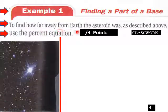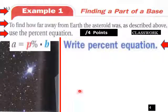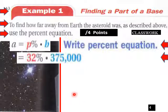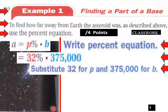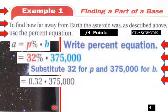Example one. To find out how far away the asteroid was, as described above, use a percent equation. So A equals P percent times B. Right, percent. So we're going to do it in example one. 32 percent of 375, so 0.32 for P and 375 for B.